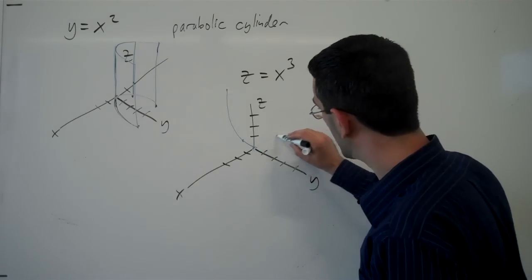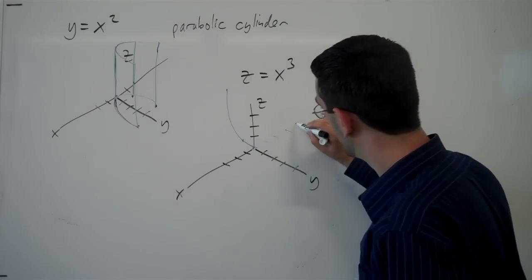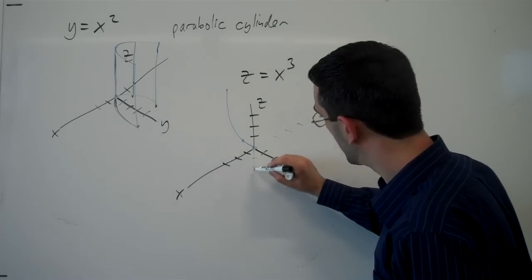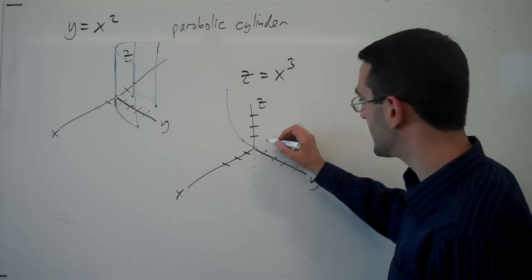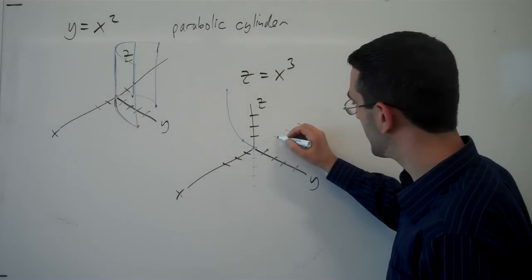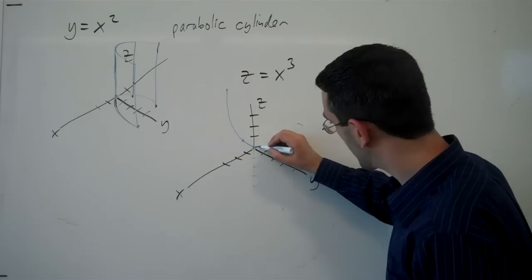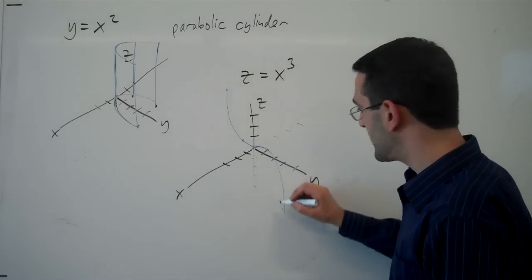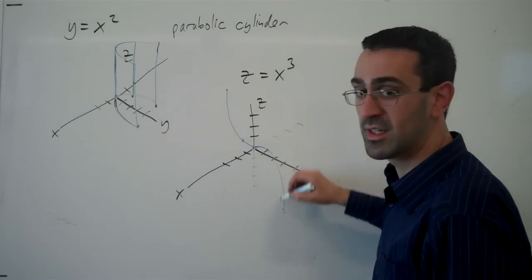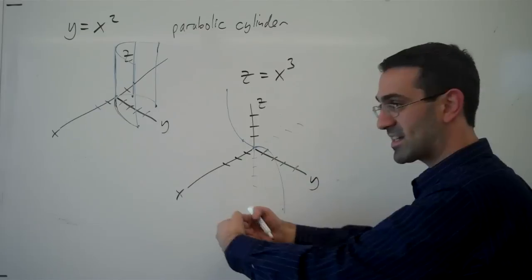If x was extending out the other direction and down. If x was negative 1, z would be negative 1. If x was negative 2, z would be negative 8. We're getting the curve down that way. Right? So there's that cubic shape occurring in the xz plane.